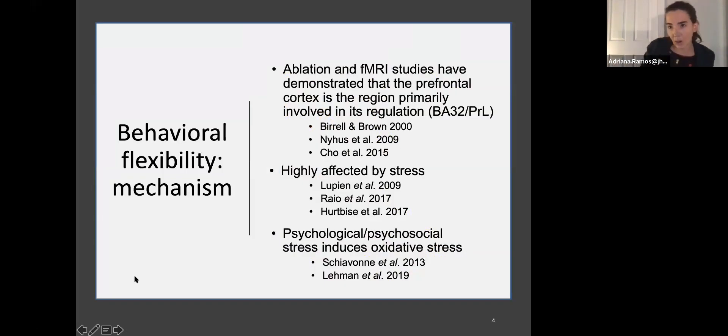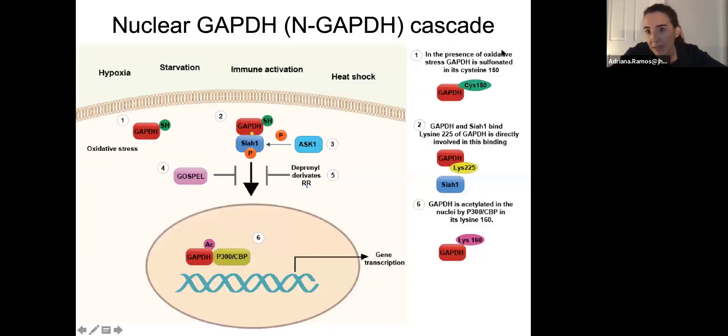Very little is known, but we know some things. We know through ablation and functional MRI studies that the prefrontal cortex region of the brain is one of the regions more important for the regulation of this behavior. All behaviors are affected by stress, but this is a behavior that is particularly affected by stress. Working on the hypothesis that psychological and psychosocial stress induce oxidative stress, I wanted to address if the nuclear GAPDH cascade that is a sensor of oxidative stress can play a role in the regulation of this behavior.